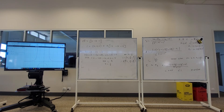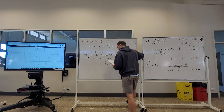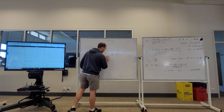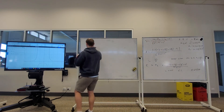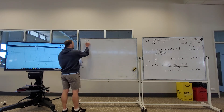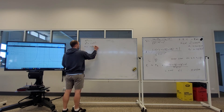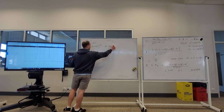Solve z³ = 1. Writing 1 as cis(0) and applying De Moivre's theorem: z = cis(0 + 2kπ)^(1/3) = cis(2kπ/3) for k = 0, 1, 2. This gives solutions cis(0), cis(2π/3), and cis(4π/3). Since we restrict arguments to (−π, π], we convert cis(4π/3) to cis(−2π/3).